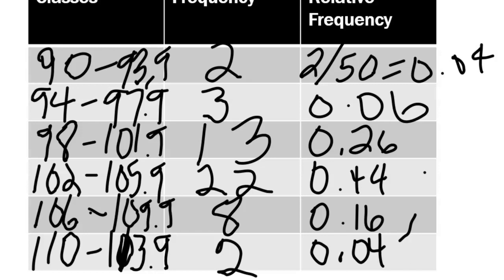This is what your relative frequency distribution would look like. So we have all these numbers and now what we want to do is create a relative frequency histogram.